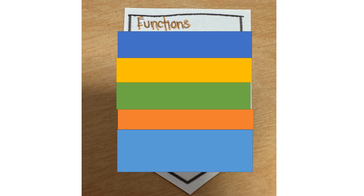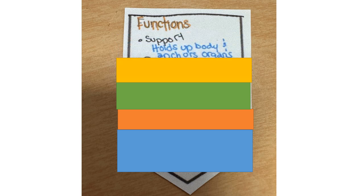Our first function is support — you'll notice the S on the side. The idea with support is that it holds up the body and anchors the organs. That's probably the skeletal system's number one thing, and you'll write that along the side with one of the S's.